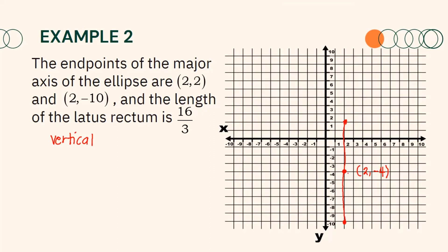Taking the distance between the center and one vertex, we can say that the distance is equal to 6 units. Therefore, a is equal to 6, and it follows that a² is equal to 36.